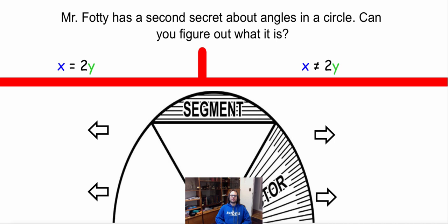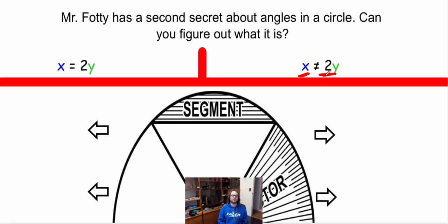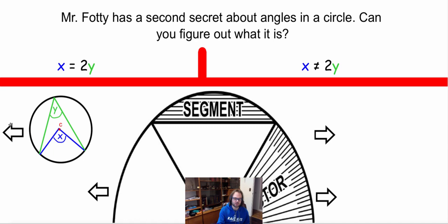So now we are about to enter the second exploration of today's video. Mr. Foti has a second secret about angles in a circle — can you figure out what it is? On one side, angle x is double the value of angle y. So angle x is double angle y in the pictures on that side. On the other side, angle x is not double angle y. I want you to see if you can think of what my rule is by using key terms and definitions that we learned in the previous class.